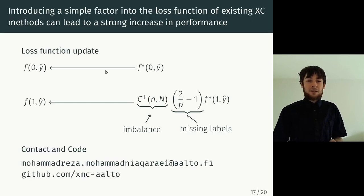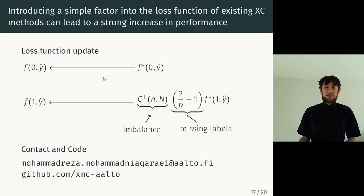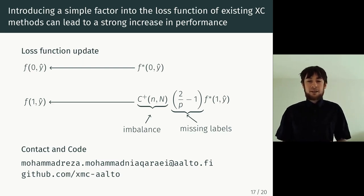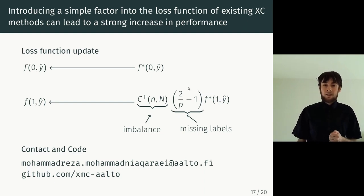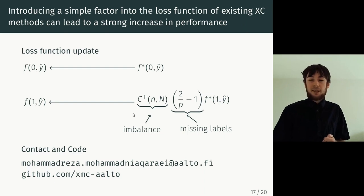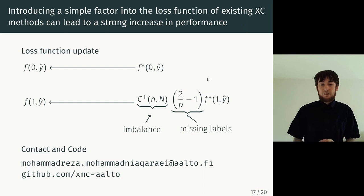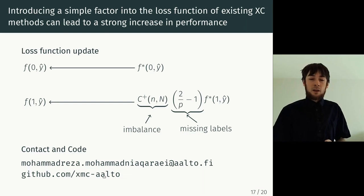So to summarize this talk, we've presented a way to adjust the loss functions in many existing extreme classification algorithms that just introduces two factors that are quickly calculated. So there's no computational overhead here and addresses both imbalance in the labels and missing labels and results in a nice improvement in terms of classification performance. If you are interested in the code or the slides, you can find them on GitHub. Thank you for your attention.